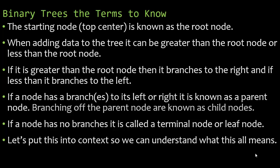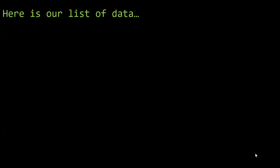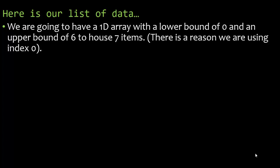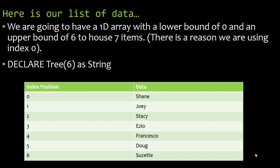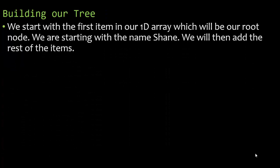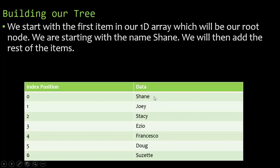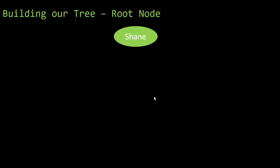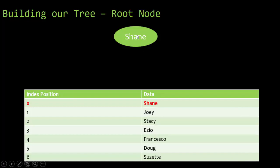So here's our list of data. We have a 1D array with a lower bound of zero and an upper bound of six to house seven items. There's a reason we're using index zero — usually we omit index zero, but I chose zero for a specific reason which we'll get into at the end of this video. We declare tree as string, and here is our list of items. So let's build our tree. We start with the first item in our 1D array, which will be our root node — the name Shane.